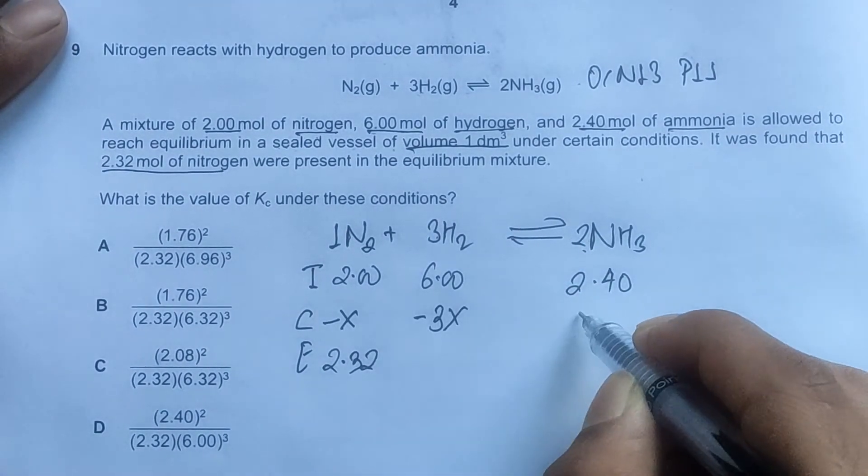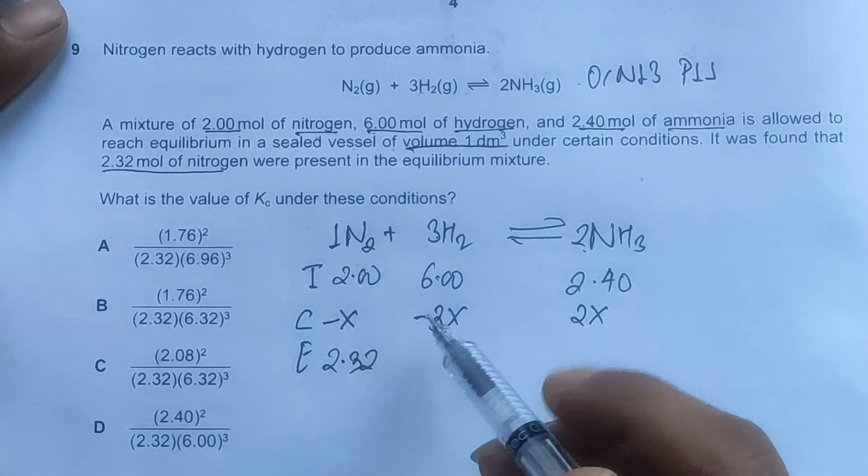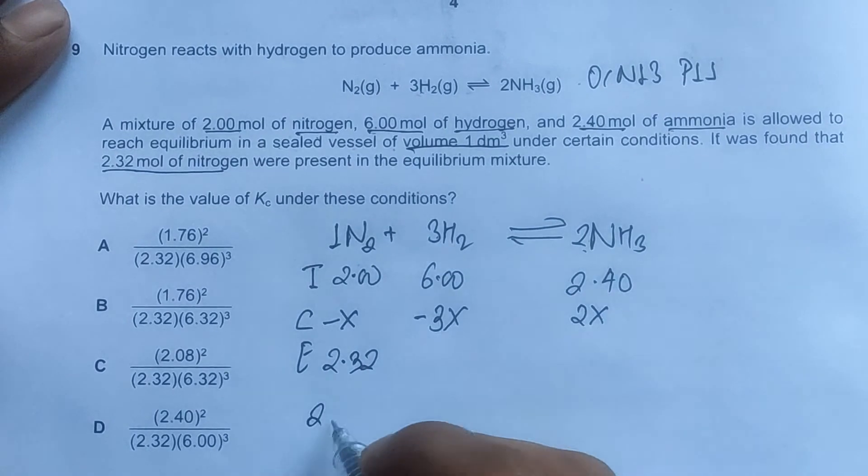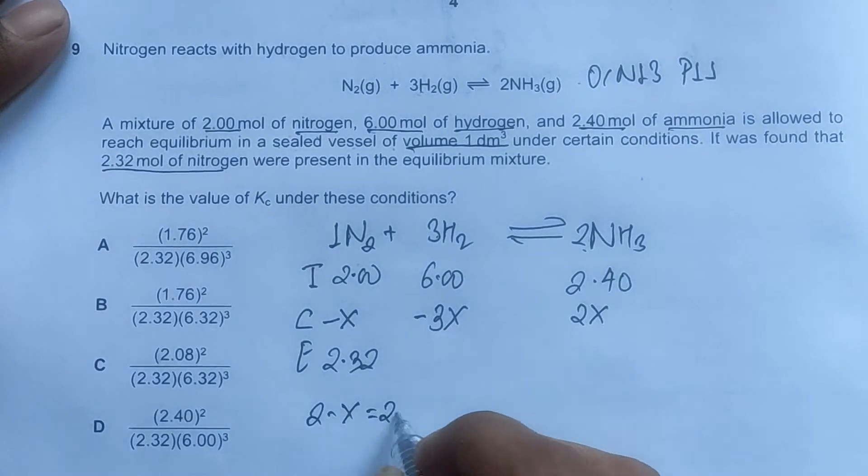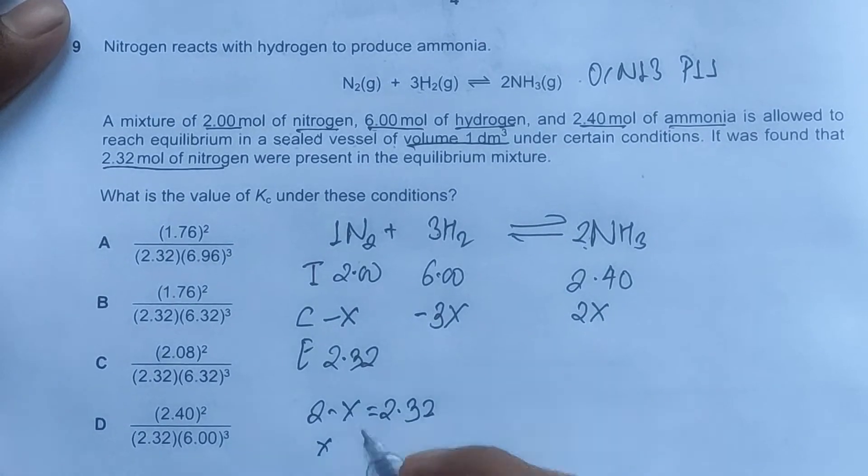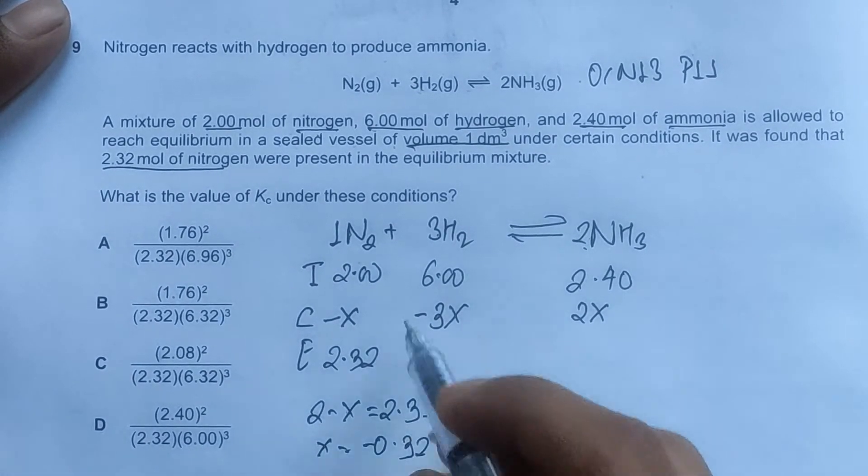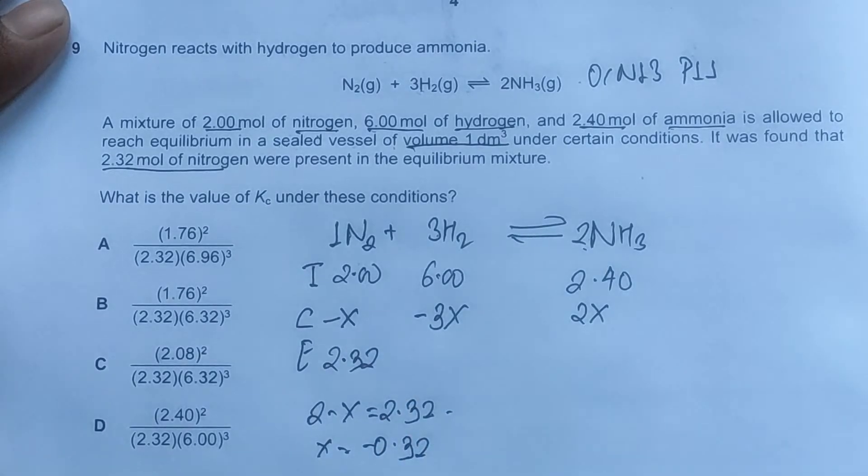First of all, we have 2 minus X equals 2.32. This means X equals minus 0.32, negative 0.32.